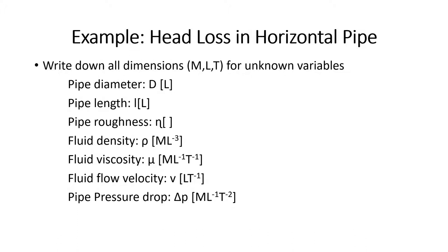First, write down all the dimensions — mass, length, time — for the unknown variables. For head loss in a horizontal pipe, we need: pipe diameter (length), pipe length (length), pipe roughness factor (dimensionless), fluid density (mass per length cubed), fluid viscosity (mass per length time), fluid velocity (length per time), and pressure drop. Pressure is force per unit area: mass times length per time squared, divided by length squared, which reduces to mass per length times time squared.